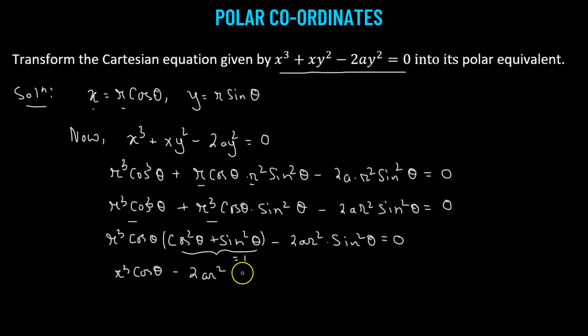Minus 2ar squared times sine squared theta. Now, we can see that we can factor out r squared from both of them. And this finally is going to give us r times cosine theta equals 2a sine squared theta. This is going to be the polar equation or the polar equivalent of the given Cartesian equation.